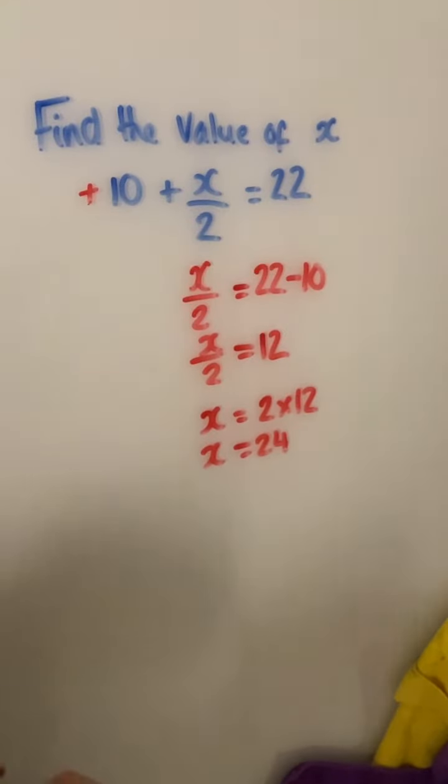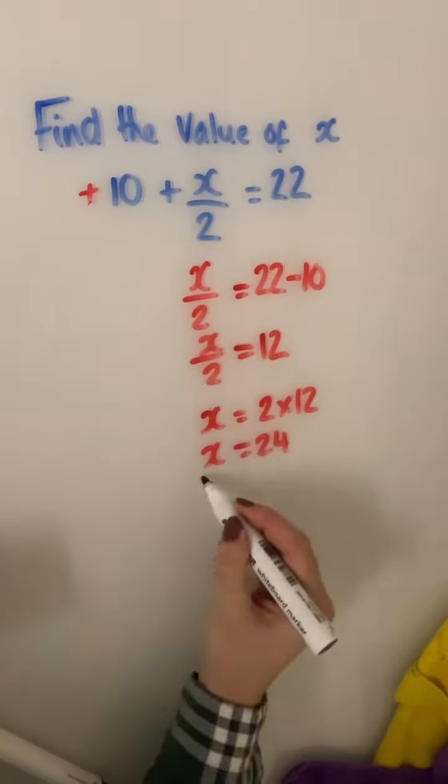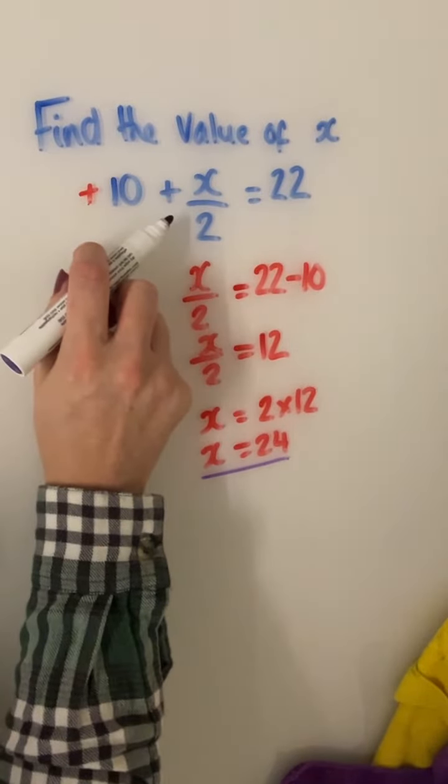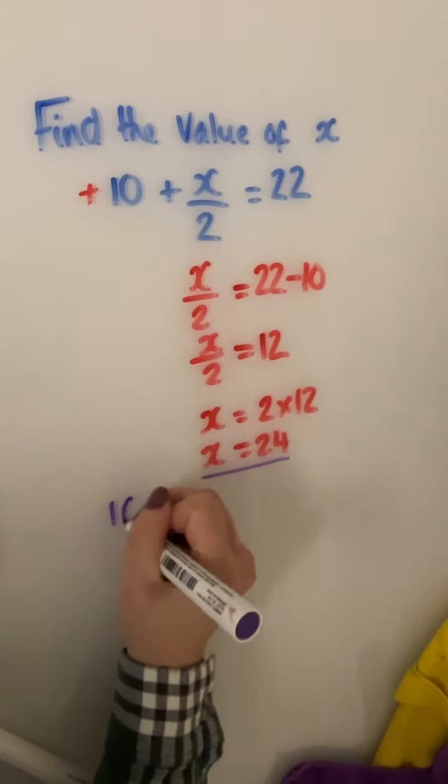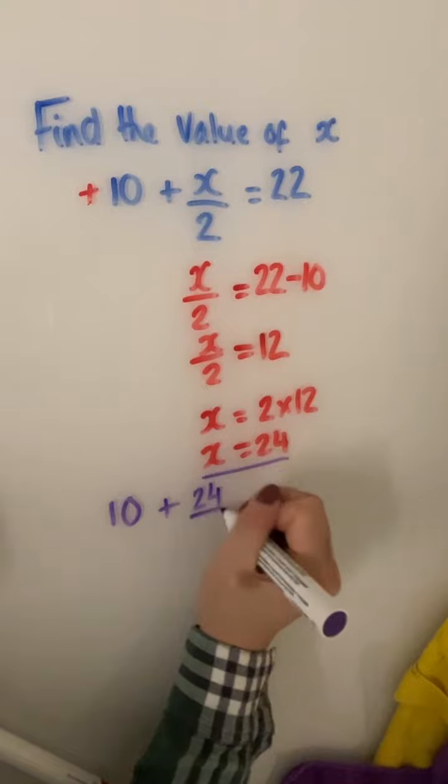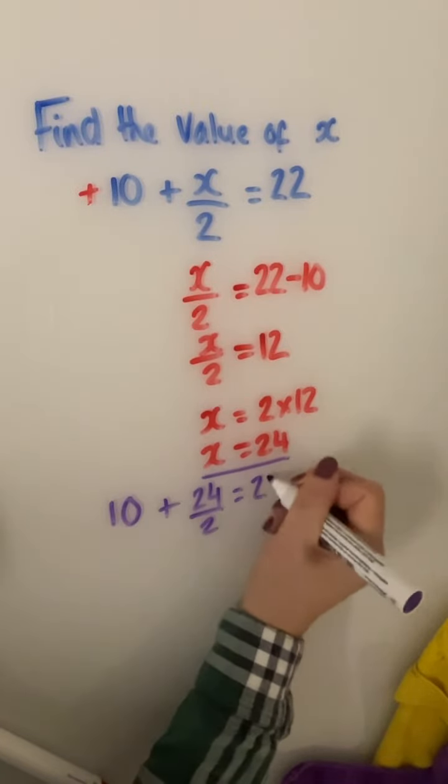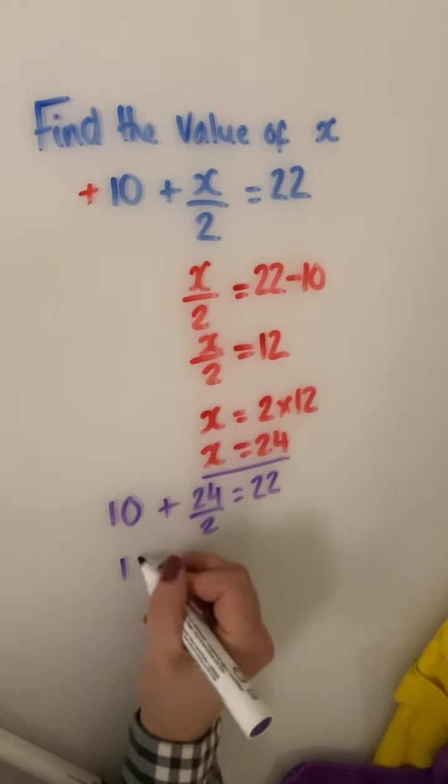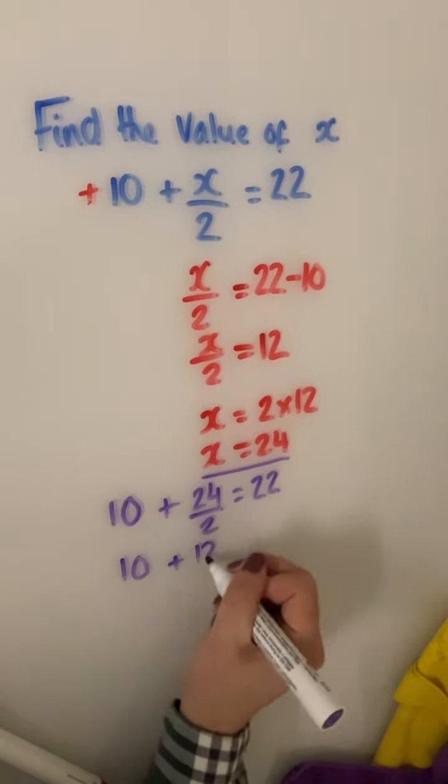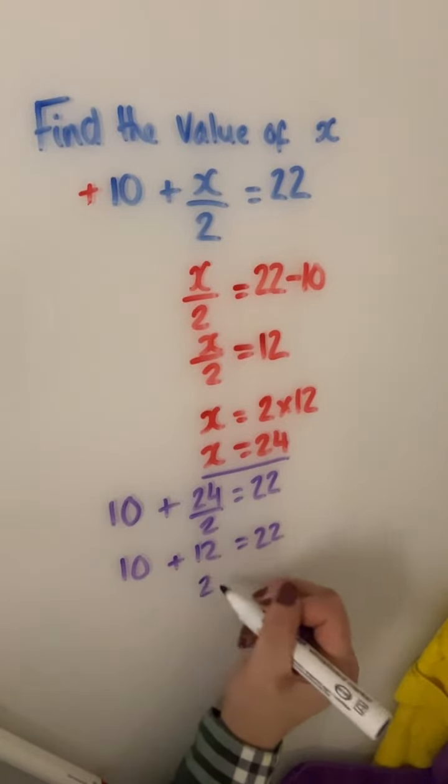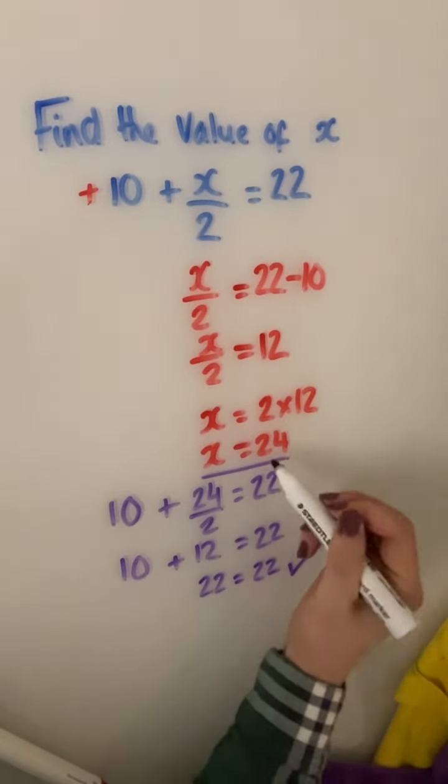Now you can check that this answer is correct by substituting the value you now have for x into your original equation. So you've got 10 add x, which is now 24 divided by 2, equals 22. 24 divided by 2 is 12, so you've got 10 add 12 equals 22, and 10 add 12 is 22. Therefore you have found the correct value for x.